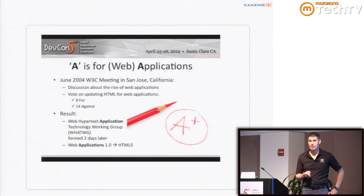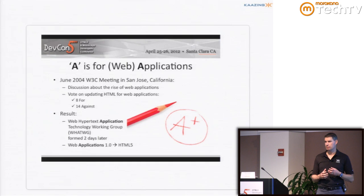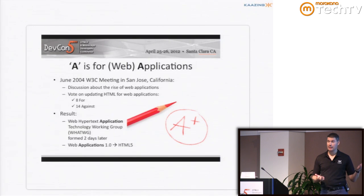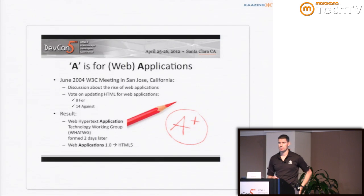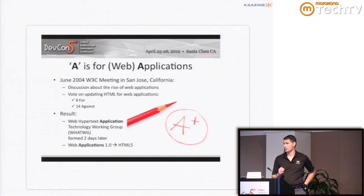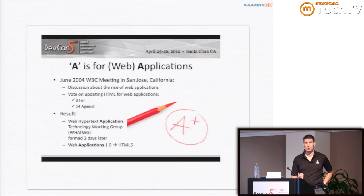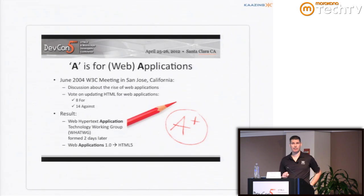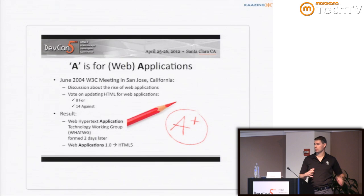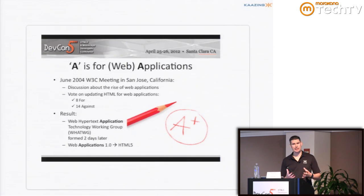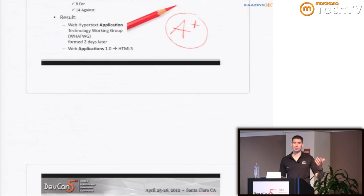It was actually in 2004, not far from here, there was a W3C meeting in which the topic was whether HTML should be augmented for web applications. And it was actually voted down - a 14 to 8 vote against improving HTML for web applications. So promptly, two days later, the Web Hypertext Application Technology Working Group was started. They started working on a specification called Web Applications 1.0, which became HTML5. Application development is very much the core of HTML5 - making applications with features that up until now were only really in desktop programming languages like Java and C++.